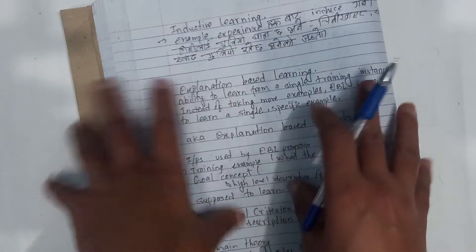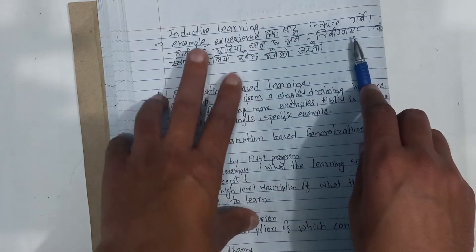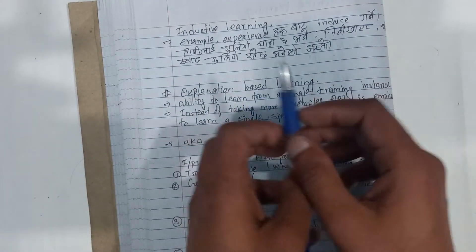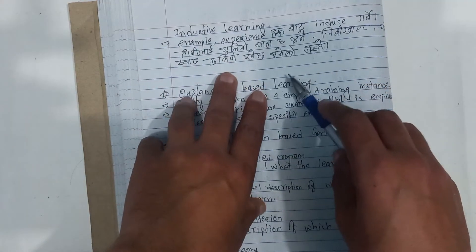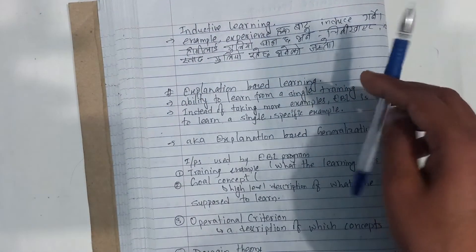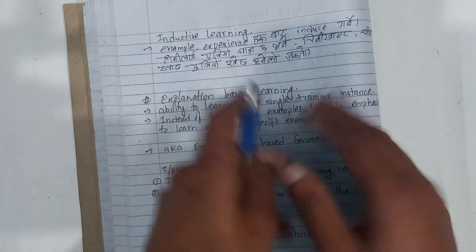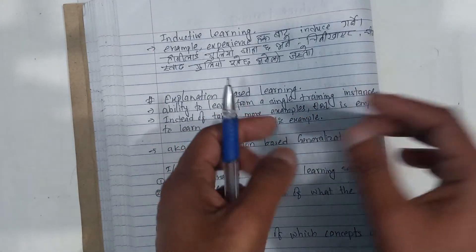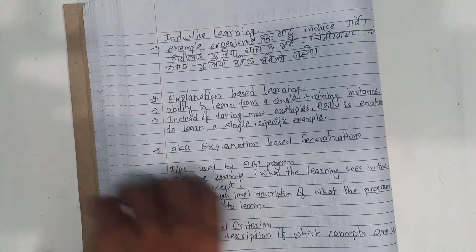Inductive learning — from examples and experience, we induce general patterns. Inductive learning: gain experience and learn new factors. For example, if we see a dog repeatedly, we learn to recognize it — that is inductive learning.